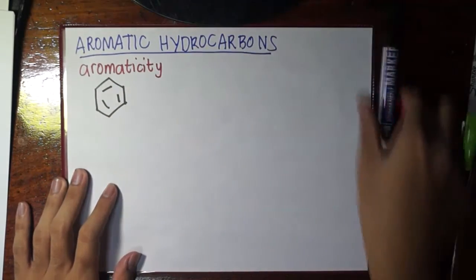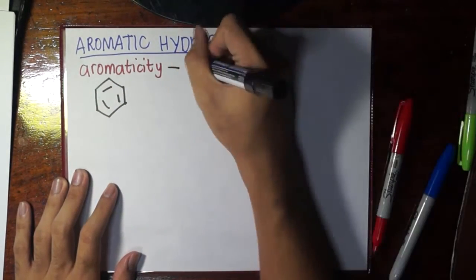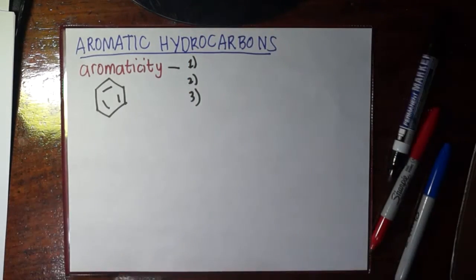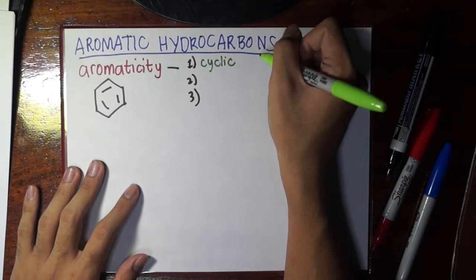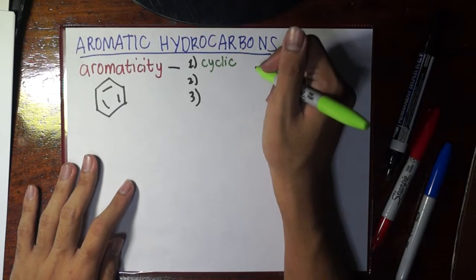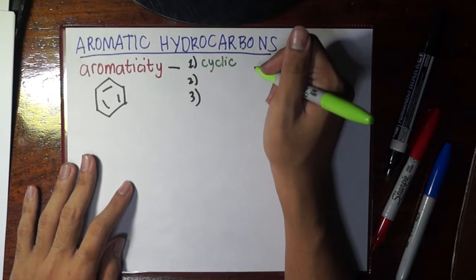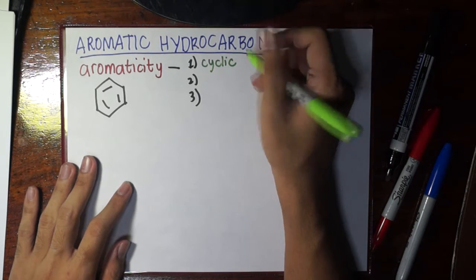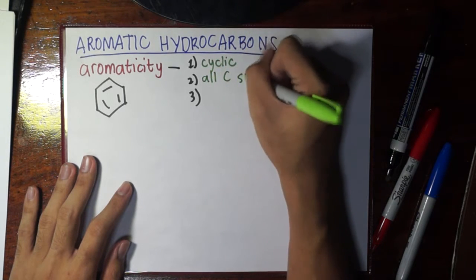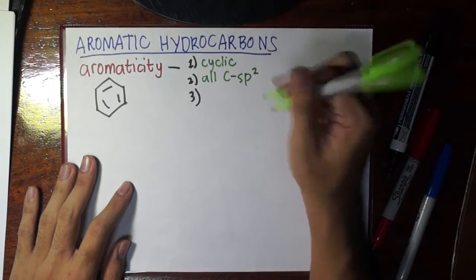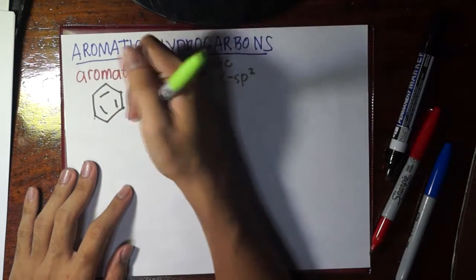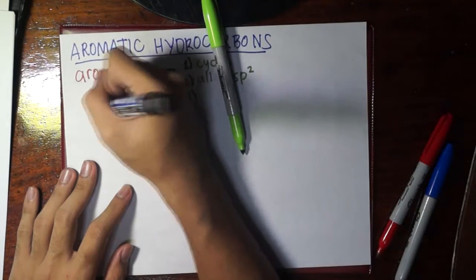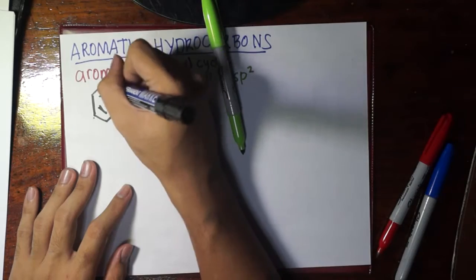For aromaticity we need three main factors. The first factor is it must be cyclic — this requirement must be met first, meaning all compounds which are not cyclic are automatically not aromatic. The second requirement is that all carbons should be sp2. Look at benzene — all of these carbons are sp2, and the arrangement of their double bonds goes double bond, single bond, double bond, single bond, double bond, single bond.